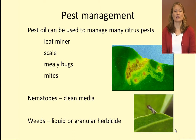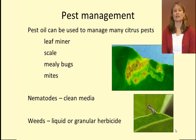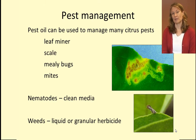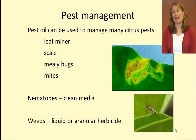Nematodes, which are tiny soil-borne animals, can be managed in a nursery by using clean growing media — that is, growing media that has been treated and does not contain nematodes. Weeds are another pest in a nursery that can be removed by hand or killed by liquid or granular herbicides.